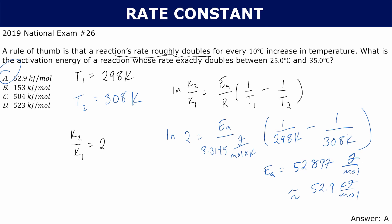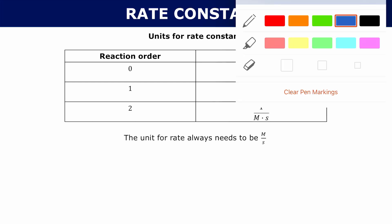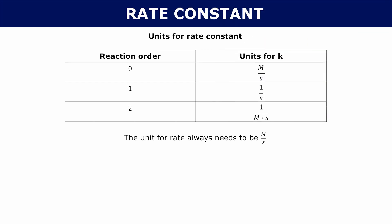The next thing to talk about is the fact that the rate constant has different units based on your reaction order. Remember, your rate law tells you that the rate equals k times the concentration of A to the power m times the concentration of B to the power n. The rate always needs to be in units of molarity per second.